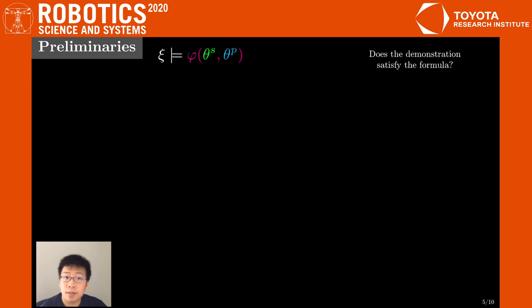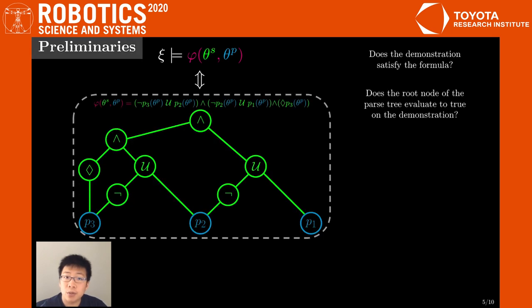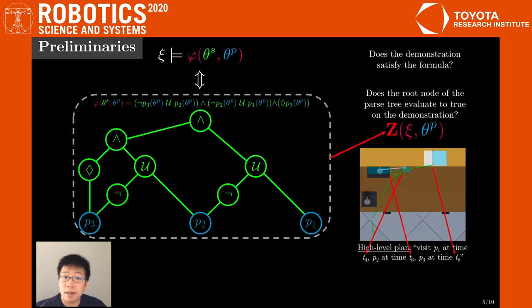let's focus on the LTL constraint. To evaluate if a trajectory satisfies an LTL formula, we can check if it returns true on a compressed parse tree representation of the formula. This can be done by finding an assignment of boolean variables, denoted z, that satisfy constraints defined by the tree structure. Intuitively, z represents a high-level abstraction of the demonstration, that is, a high-level plan. Then given z, we can enforce that the formula is satisfied with a constraint of this form.